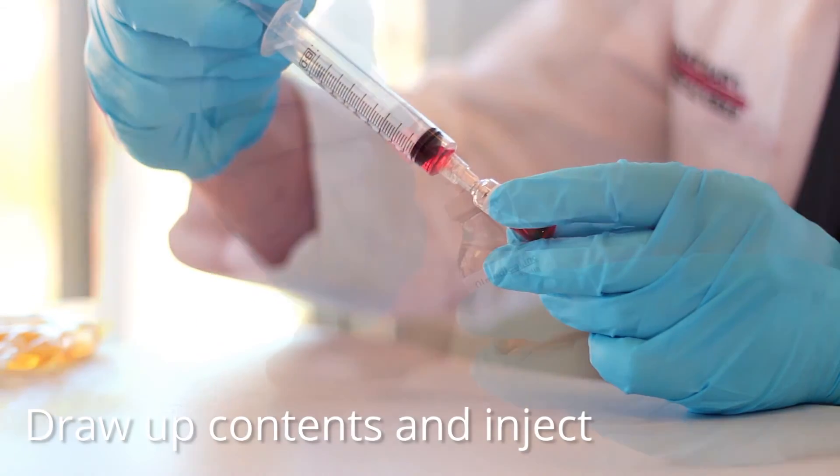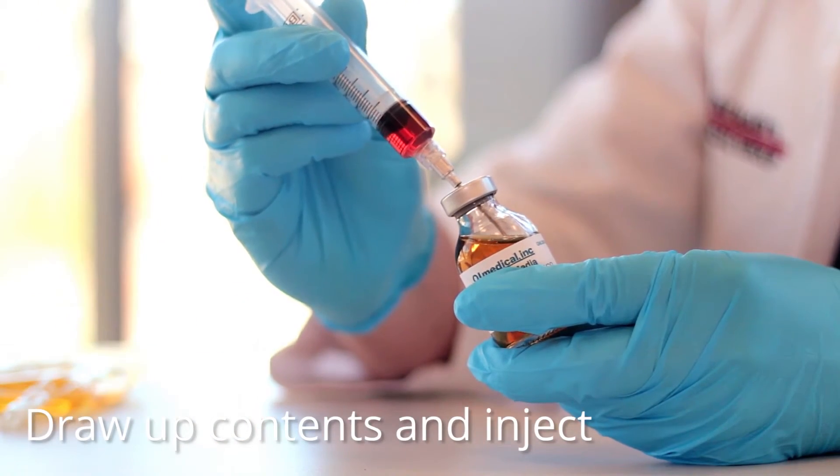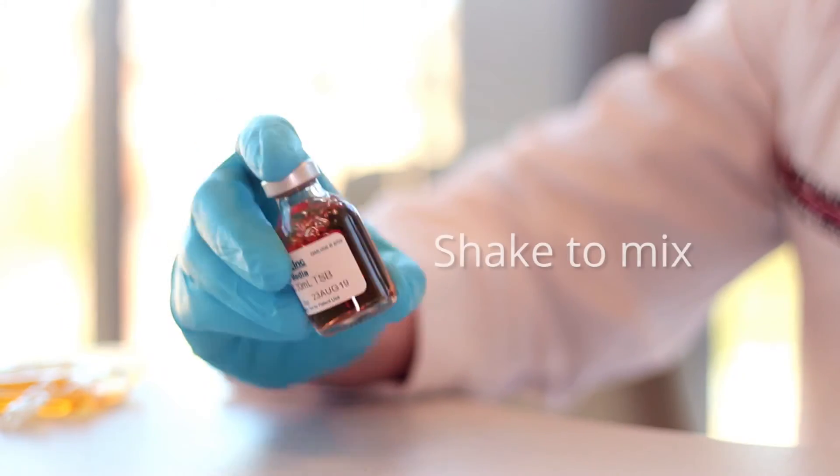Draw up contents of the ampoule and inject into the GrowMed vial. Shake to mix indicator dye.